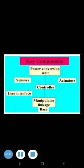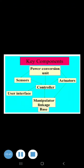The next part is robot joints. Mechanical joints of the robot can be classified into one of five types: two types that provide translational motion and three types that provide rotary motion. Translational motion includes the linear joint and orthogonal joint, and rotary motion includes rotational joint, twisting joint, and revolving joint.